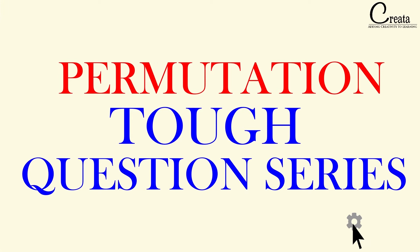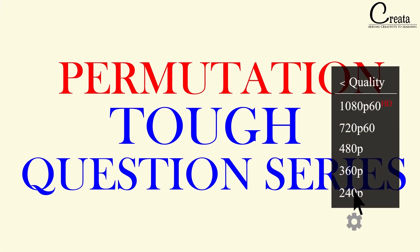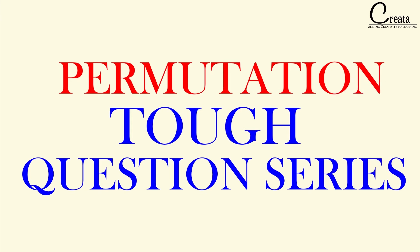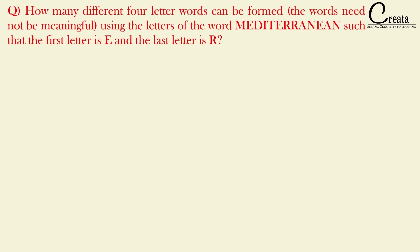Welcome to the second part of the ninth lecture on questions involving higher-level permutations. Our next question is: how many different four-letter words can be formed — words need not be meaningful — using the letters of the word 'mediterranean', such that the first letter is E and the last letter is R?